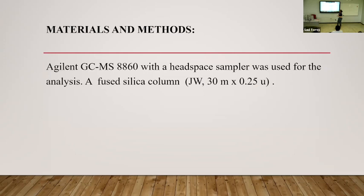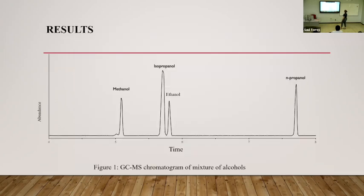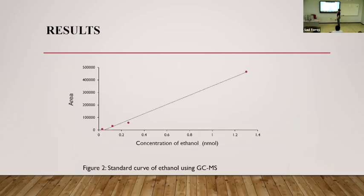The materials and methods we use include an Agilent GCMS 8860 with a headspace sampler, used for analysis, including a fused silica column. This is us working in the lab. This is the kind of graphs we get after we run the process, and now we can see what concentrations we have of these chemicals. Here's another graph showing the concentration of ethanol — we have this output for ethanol using the GCMS method.